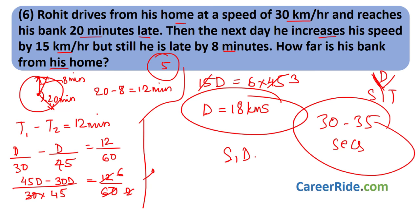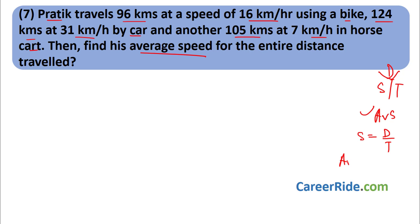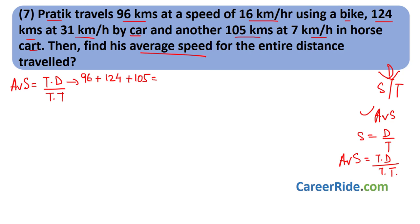With enough practice you will get this answer in 30–35 seconds. If you practice well, you can solve any speed-distance-time sum within one minute. Question 7: Pratik travels 96 km at 16 km/h by bike, 124 km at 31 km/h by car, and 105 km at 7 km/h by horse cart. Find his average speed for the entire journey. This is clearly an average speed problem: Average Speed = Total Distance ÷ Total Time.